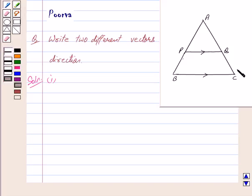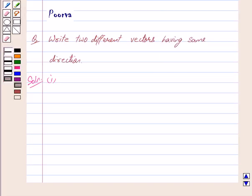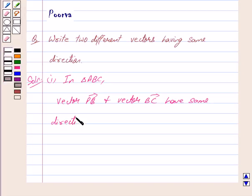We can clearly see from the figure. So we write, in triangle ABC, vector PQ and vector BC have same direction, but they are different in magnitude.